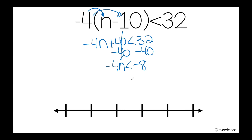So in this case, I will reverse the direction — now it will be pointing towards this direction because I'll divide by negative 4 here and negative 4 here. I cancel it out, and I have n.